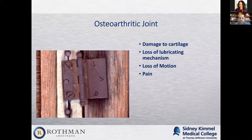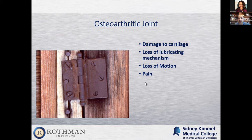That can change. Now you get this joint or this door hinge — this door hinge is damaged cartilage. It's loss of lubricating mechanism, loss of motion, pain. It creaks, it cracks, it makes noises. And that's the best way I can give a simple analogy for arthritis.